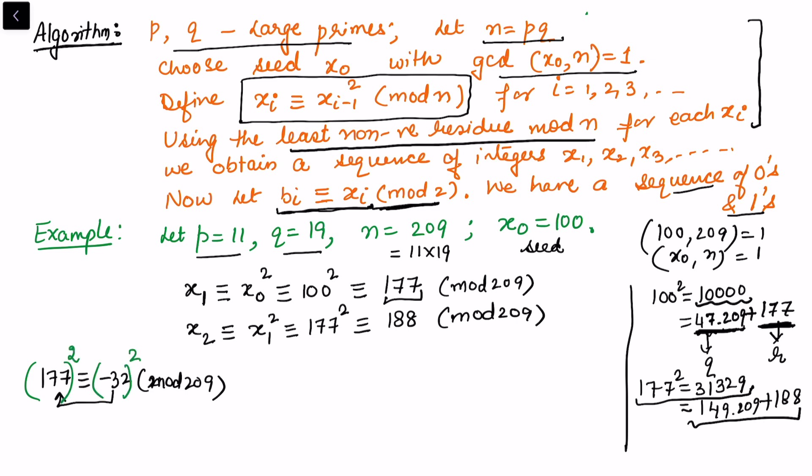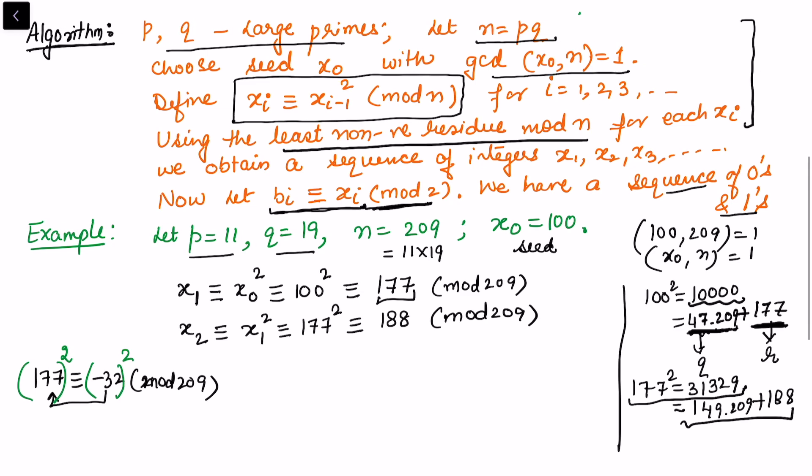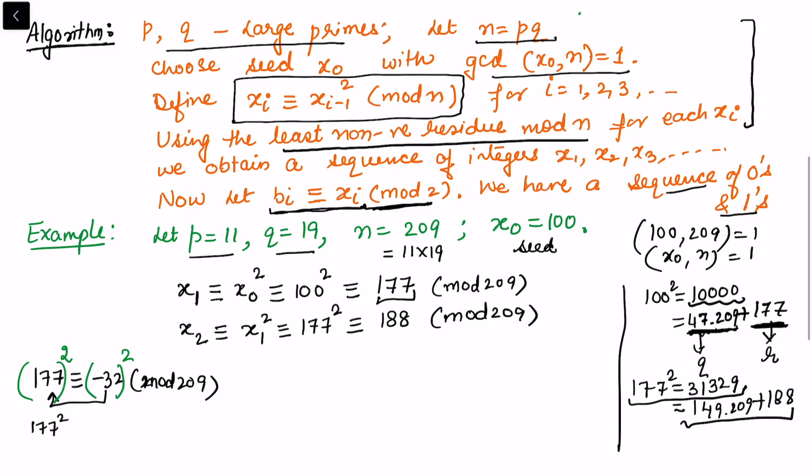you take this minus 32 on this side, this will become 209 and 209 will divide this. So now there is a basic property of congruences that you can raise any positive power. So suppose I raise on both sides square - so here I will get 177 square, and 32 square is 1024. So you can see that